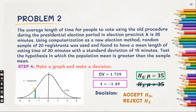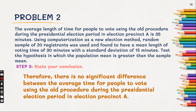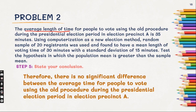Lastly, step number 5: state our conclusion. Therefore, there is no significant difference between the average time for people to vote using the old procedure during the presidential election period. The answer is based on the problem itself, as we are talking about the average length of time for people to vote. That would be all for the discussion — we'll now move on to the worksheet problem set for this lesson.